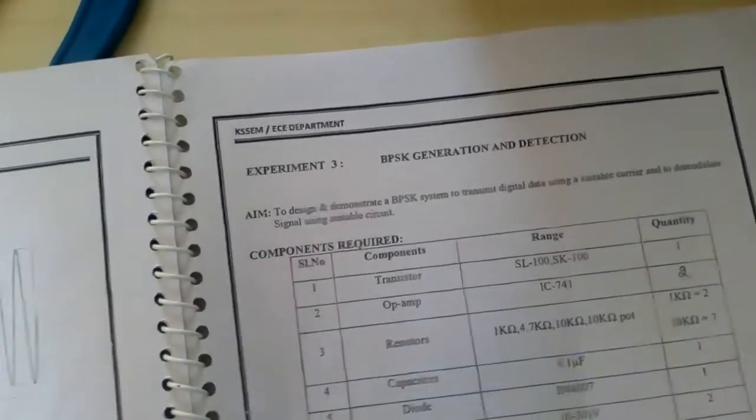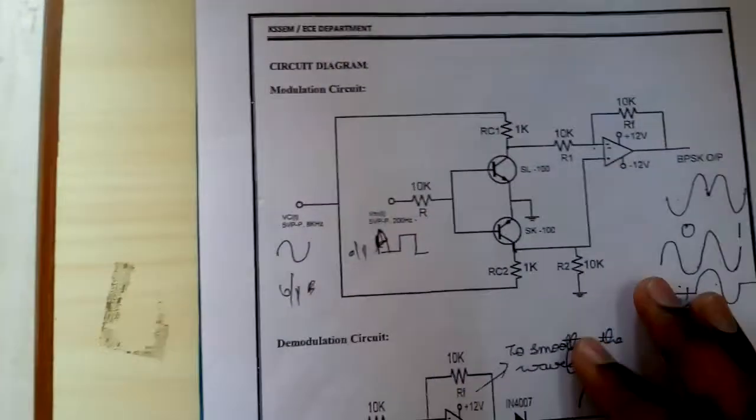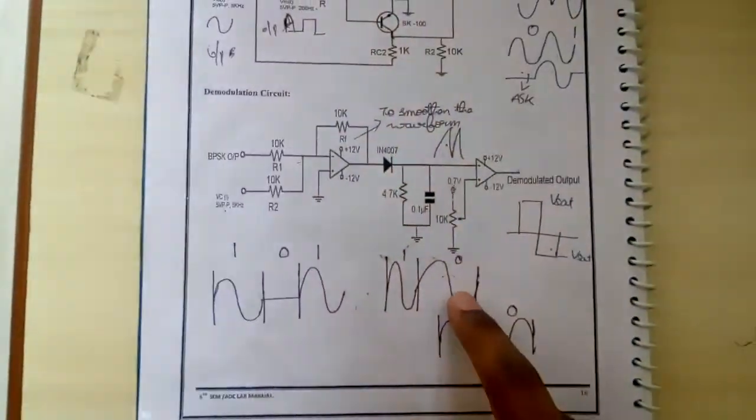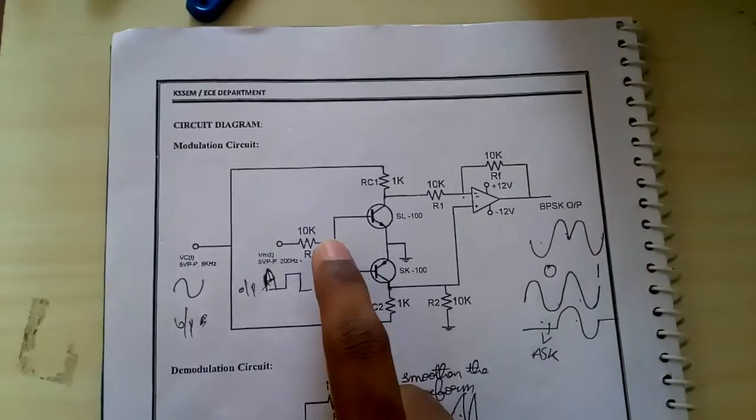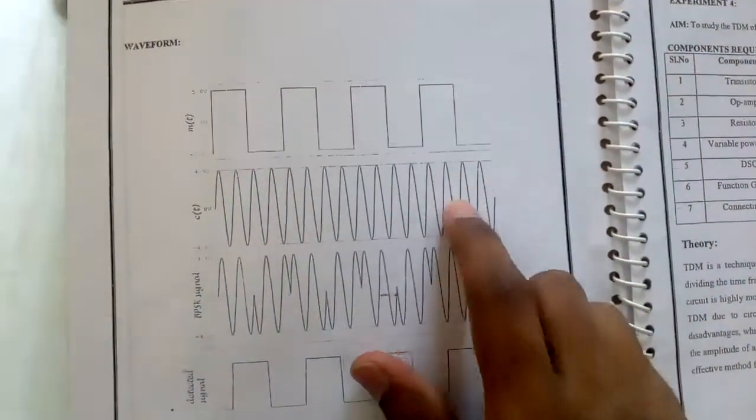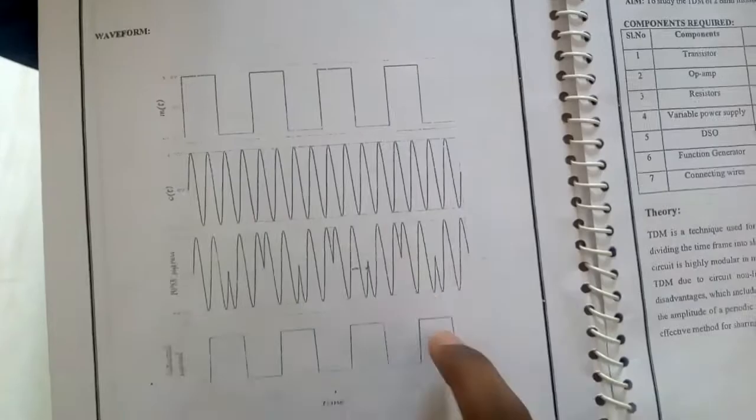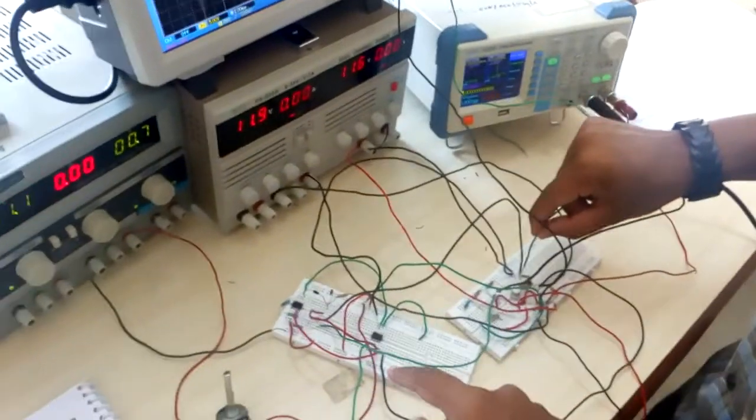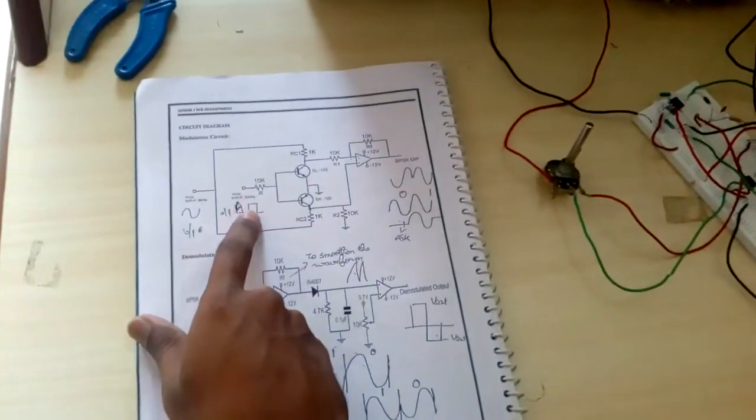This is BPSK generation and detection. This is the modulator, and this is the expected graph. Here's the message, carrier, and the output of the modulator and demodulator. This is the modulation circuit, and this is the demodulation circuit. Now connect the message signal.